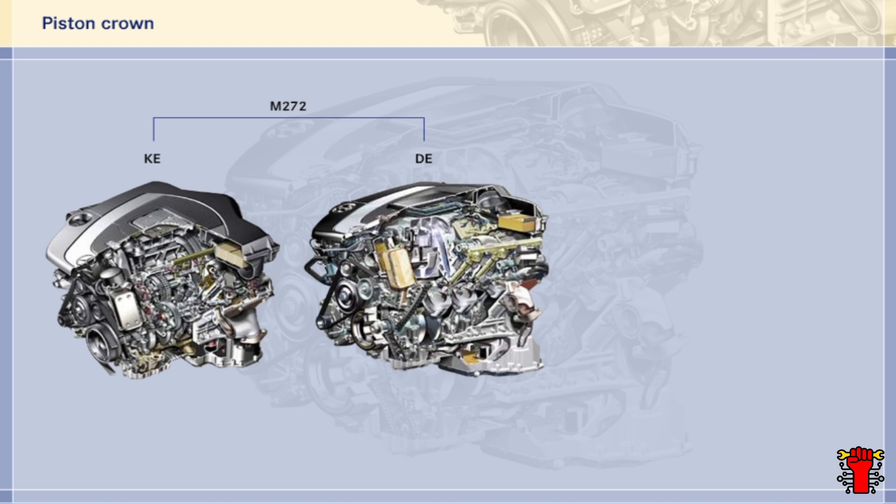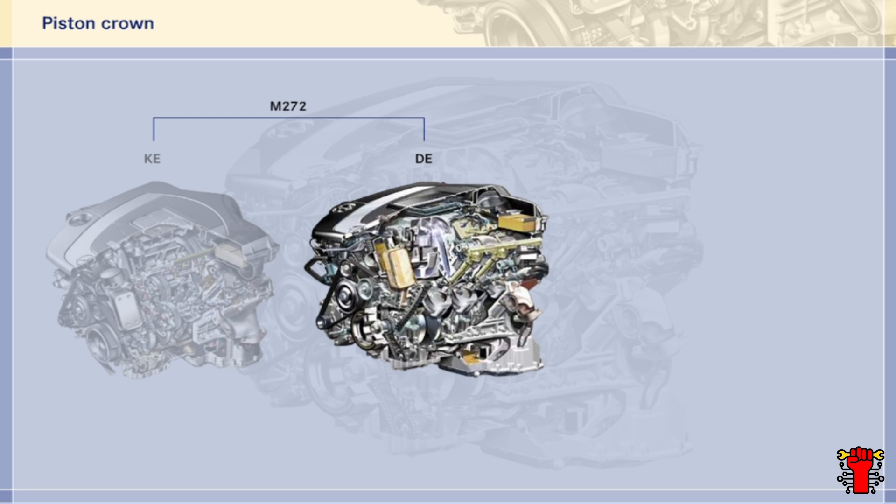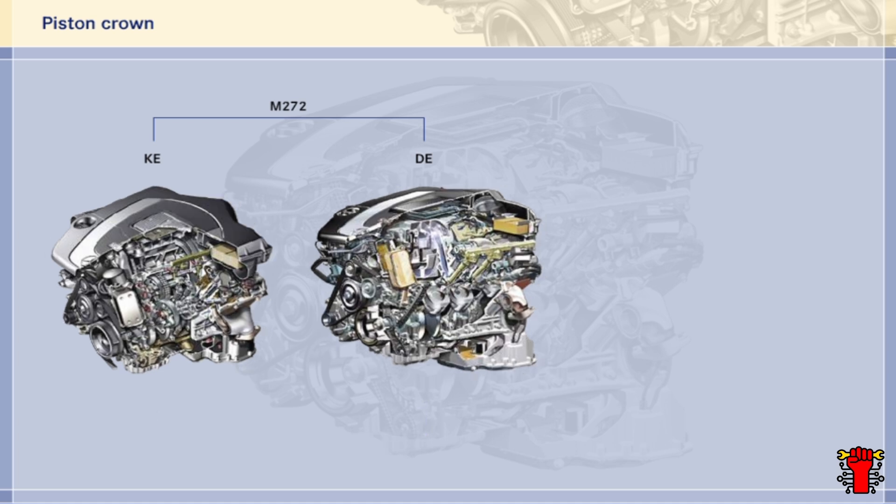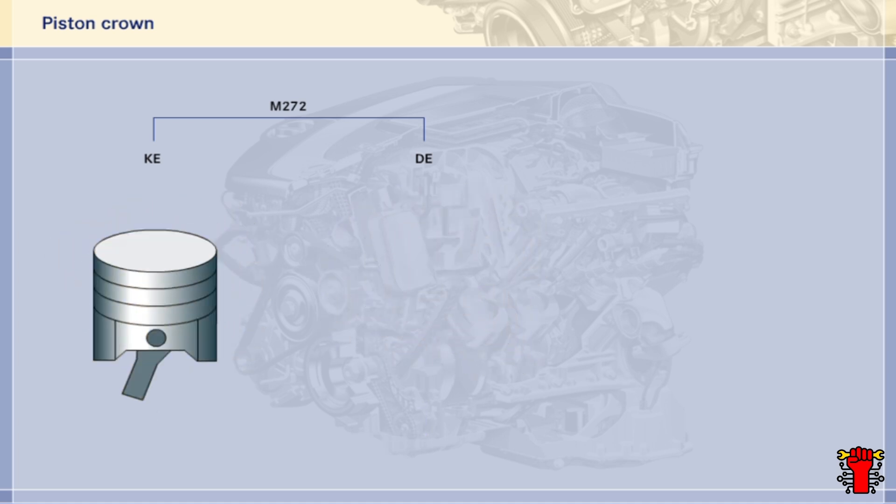This program will focus on the special features of the DE version. Chapter one looks at some of the basic features which distinguish the DE version from the KE version. These include the mechanical engine systems, the control unit, a new bus, and the coolant circuits.